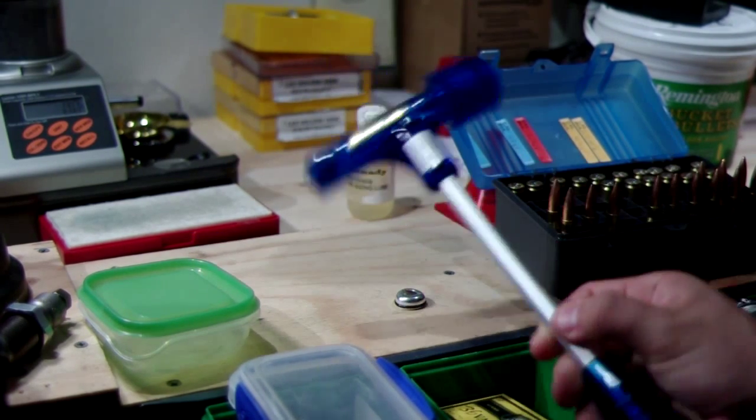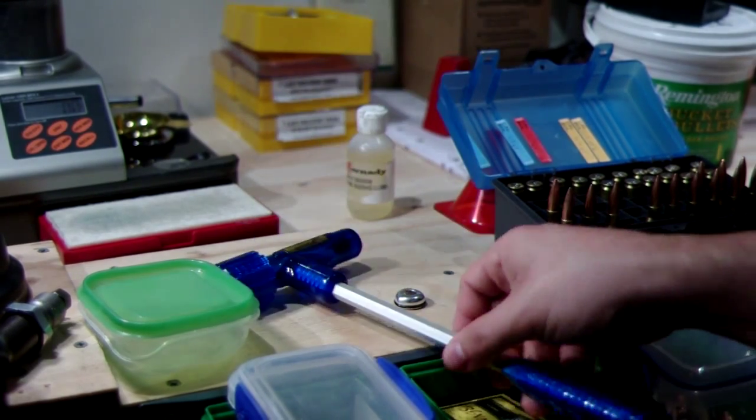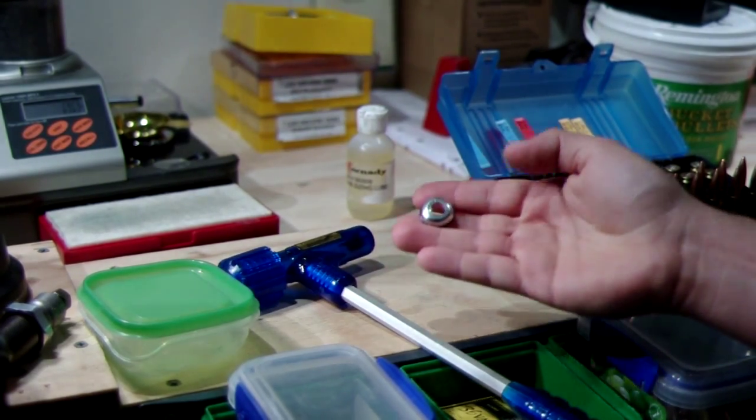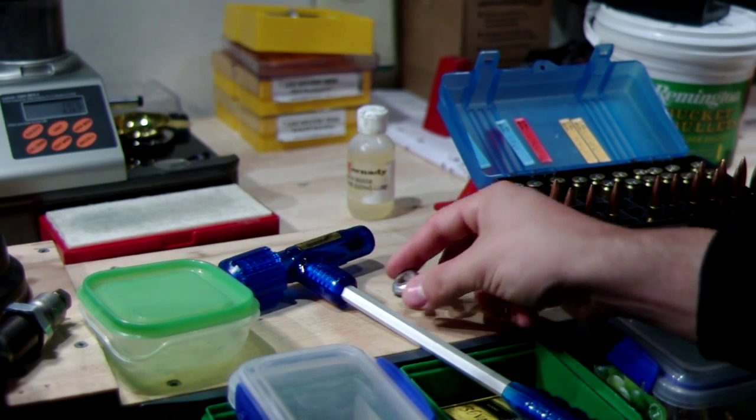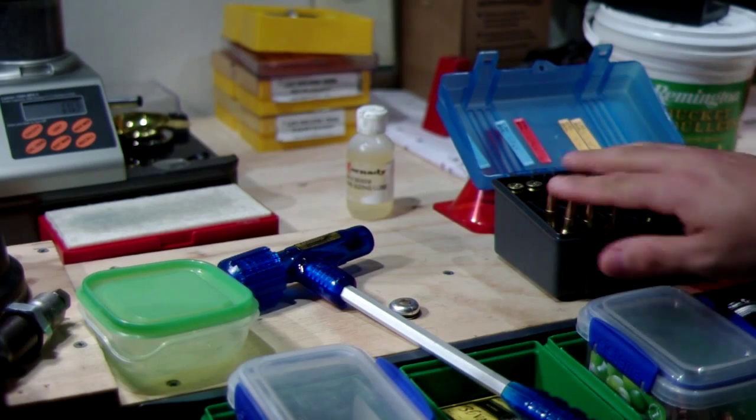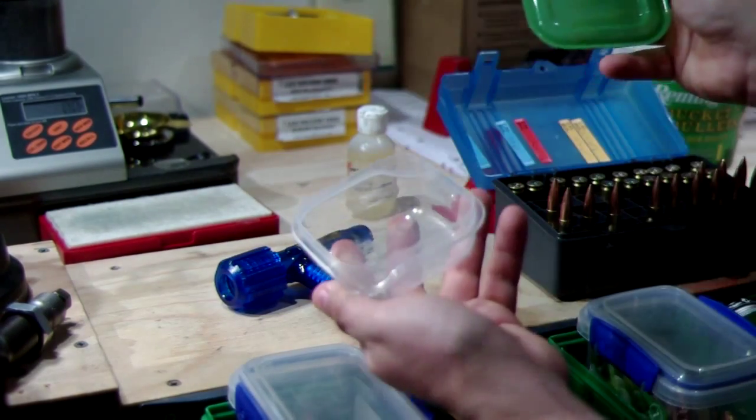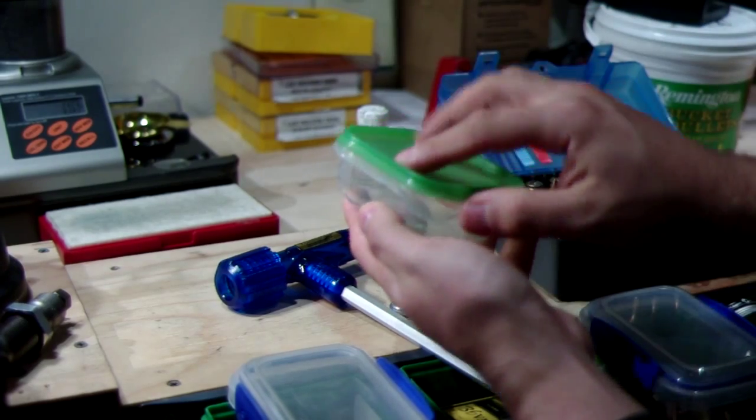First thing we need is a bullet puller. This is a kinetic bullet puller. Next thing you need is the correct collet for the bullet to fit in. Then you're going to need your bullets to pull and just something small and easy to put them in once they've been pulled down.